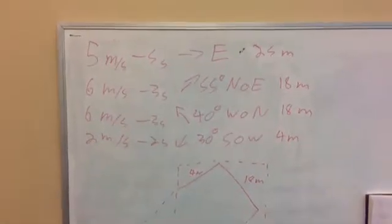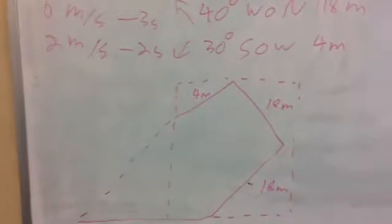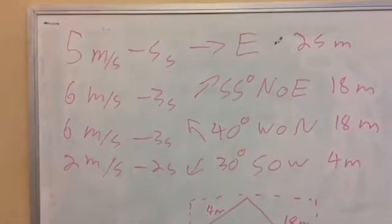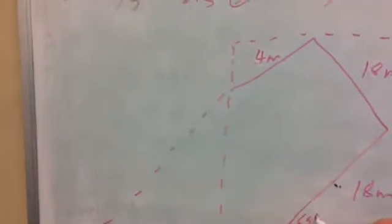Also from the above information, we know the angles at which he turns. First, we know that he turns north of east at 55 degrees. So we know that this angle here will be 55 degrees.